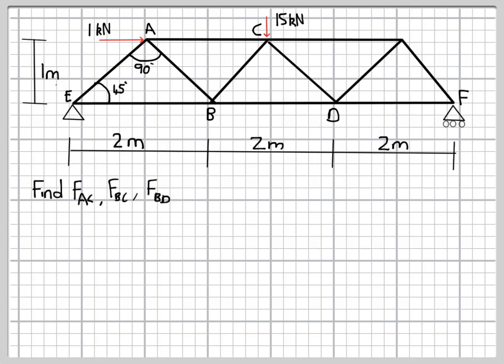We're asked to find the forces in just three members: AC, BC, and BD. This is typical because the forces in the central members of a truss such as this are quite often the highest forces, and so of most interest.